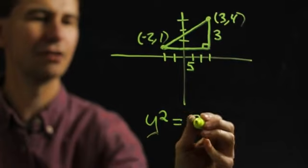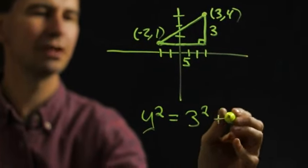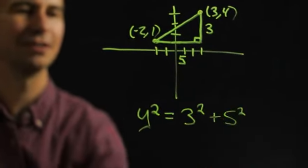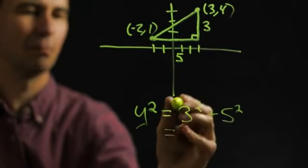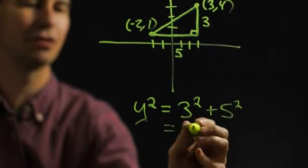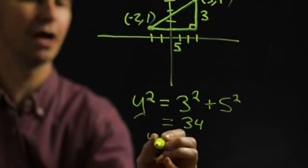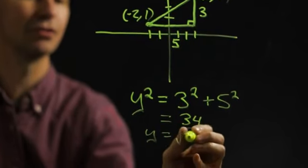So, in this case, you would get three squared plus five squared. And if you multiply those all together, you come out with 34. So, that means y is the square root of 34.